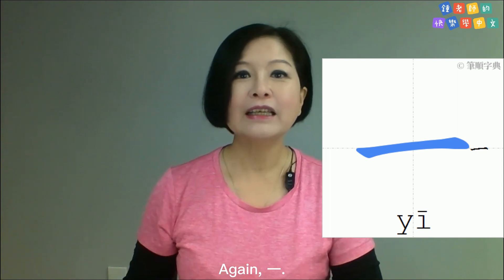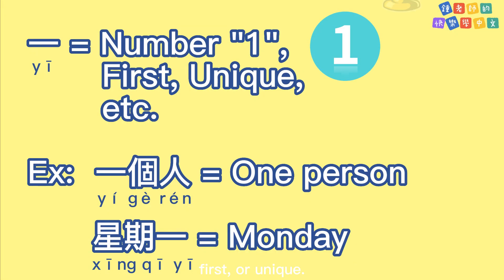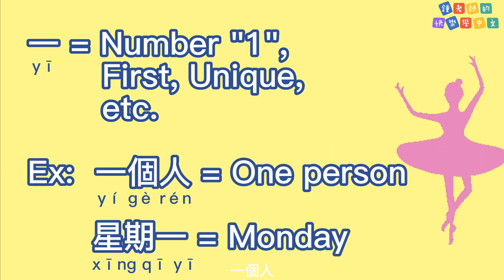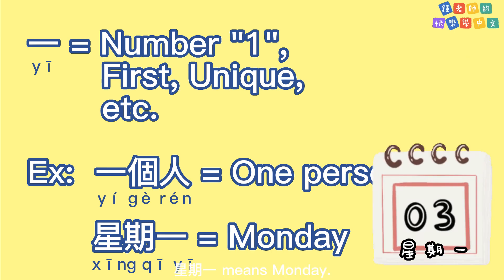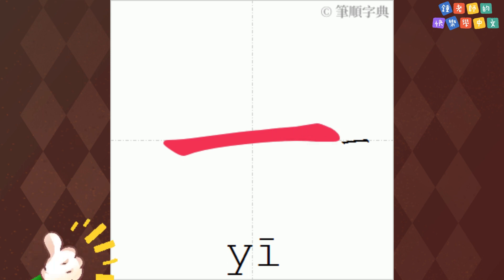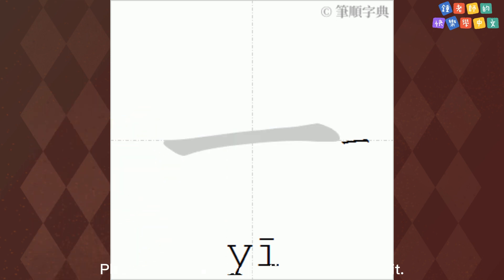Again — 一. 一 means one, first, or unique. For example, 一个人 means one person. 星期一 means Monday. One more time — 一, left to right. Please practice more until you remember it.